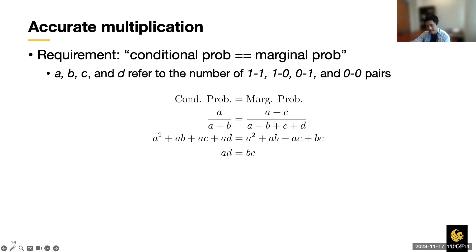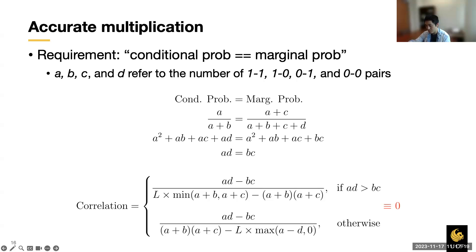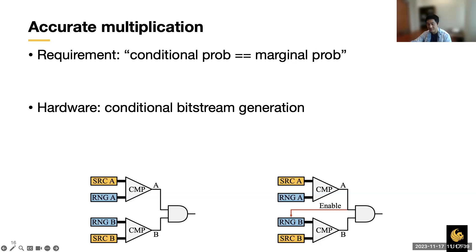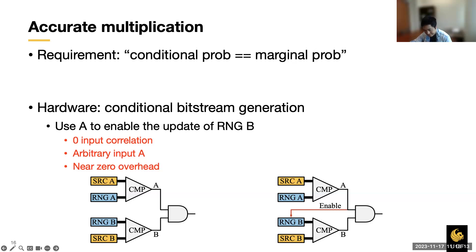The comparison above shows that accurate unary multiplication requires the equivalence between conditional and marginal probability. Then how does such equivalence impact the correlation mathematically? According to the equivalence, we first derive the relationship among different bit pairs. Then we plug in the above equation into the correlation definition and find out that the resultant correlation is a constant 0. As such, the requirement of equivalence between conditional and marginal probability guarantees correct unary multiplication. Then translating this requirement to hardware is surprisingly simple.